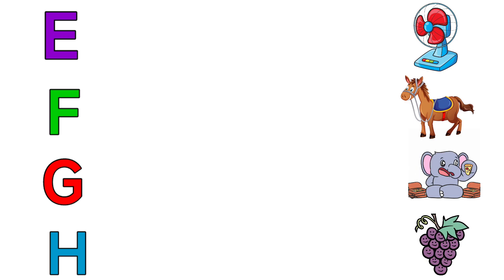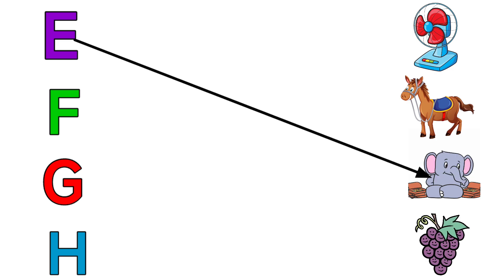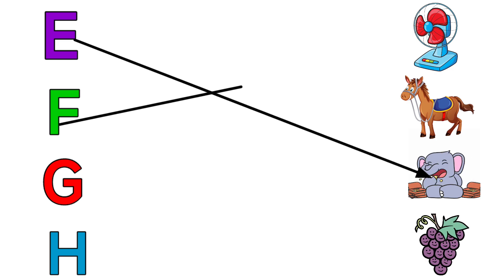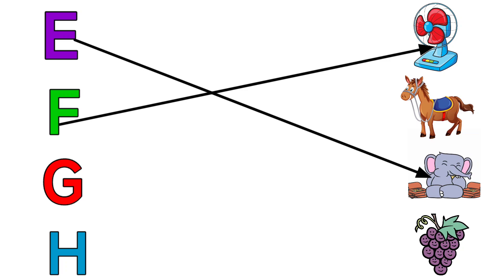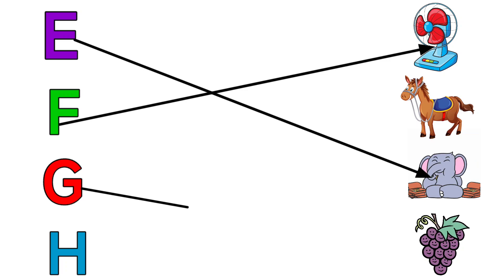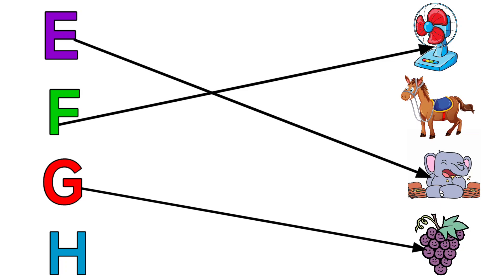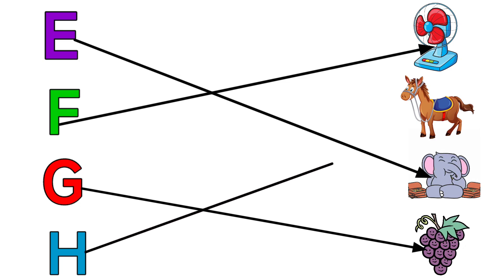E for Elephant, F for Fan, G for Grapes, H for Horse.